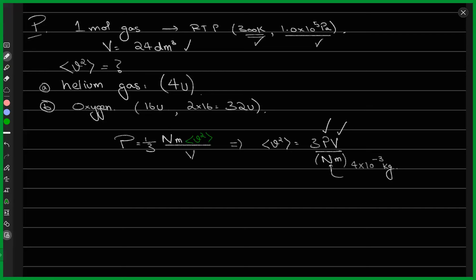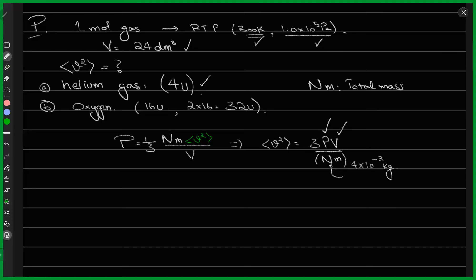We have this equation relating pressure and velocity. We rearrange it for the expectation value of velocity squared. P and V are known — room pressure and volume of 24 decimeters cubed. N × m is the total mass of one mole of any atom. In this case, helium: Nm = 4 × 10⁻³ kilograms.